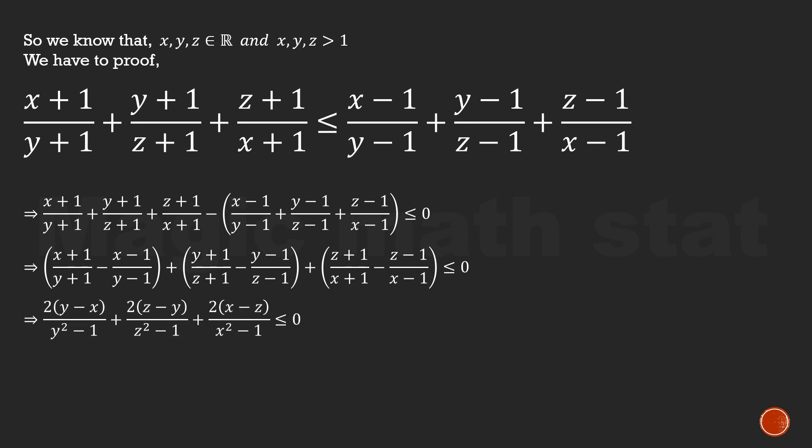Now simplify each bracket. You will get 2(y-x)/(y²-1) plus 2(z-y)/(z²-1) plus 2(x-z)/(x²-1), the whole expression less than or equal to 0. We can divide each side by 2 and get (y-x)/(y²-1) + (z-y)/(z²-1) + (x-z)/(x²-1) ≤ 0.